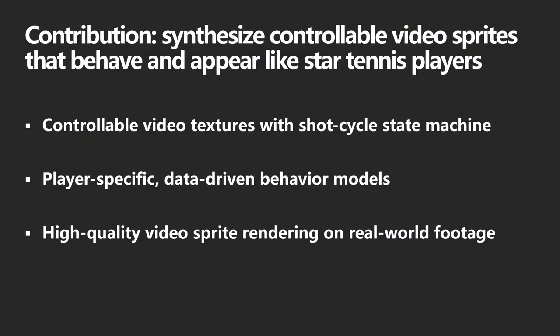Our goal is to create virtual characters that look, move, and behave in simulated points like star tennis players. To achieve this, our work makes the following contributions. First, we use domain knowledge to design a racket-sport-specific state machine to control and synthesize our video sprites. Second, inspired by the field of sport analytics, we build player-specific data-driven behavior models that predict a player's shot selection and court positioning decisions, used as control inputs for the state machine. Third, we provide methods for preparing a large database of real-world broadcast footage for use in a rendering system based on controllable video textures.